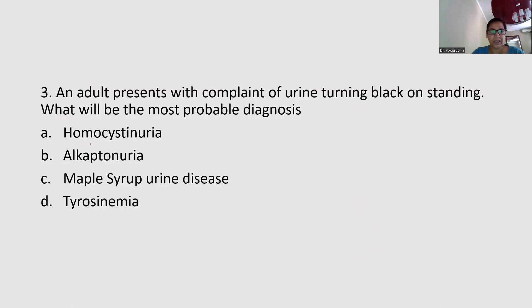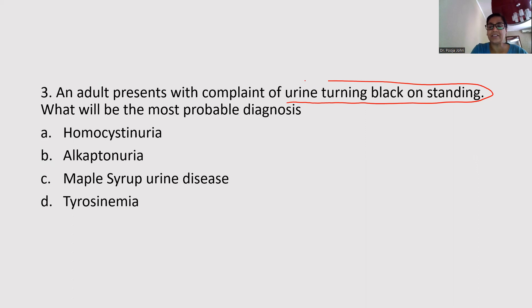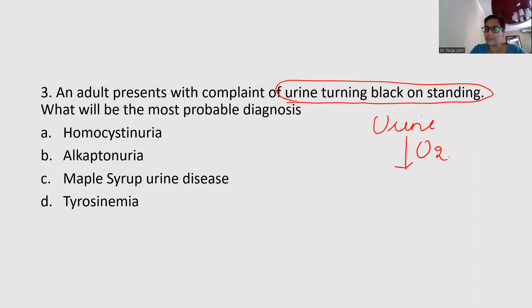Moving on to the next question: An adult presents with a complaint of urine turning black on standing. What is the most probable diagnosis? The key focus here is that urine turns black on exposure to air — meaning in the presence of oxygen, something in the urine gets oxidized and turns black.